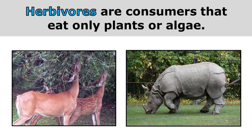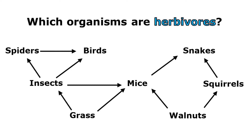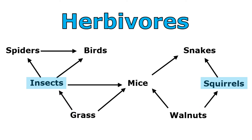Herbivores are consumers that eat only plants or algae. This question asks which organisms are herbivores. I can see that the insects are only eating grass and the squirrels are only eating walnuts. So because the insects and the squirrels are only eating plants, they are herbivores.